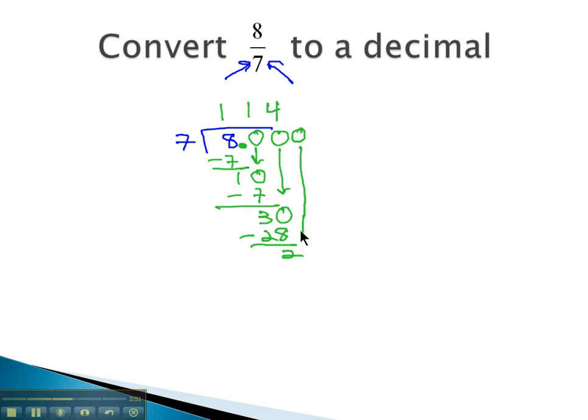Add another 0, bring it down. 7 goes into 20. We're going to need to extend our division bar twice, because 7 times 2 is 14. Subtract, and we get 6.